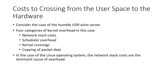Now we get to talking about the cost of crossing from user space to hardware space. To begin this consideration, let's consider the humble UDP Echo server — a server in which the network hardware receives a UDP packet, sends that packet all the way up through the kernel to the user space, and then the user space simply provides a quick acknowledgement all the way back to hardware space.